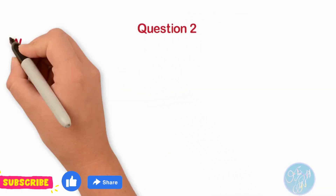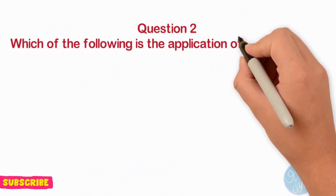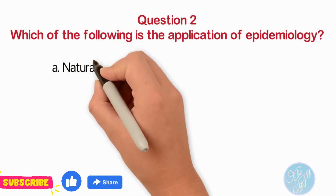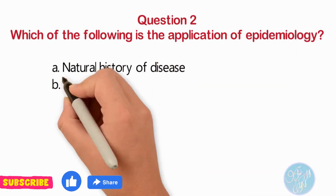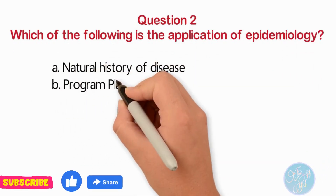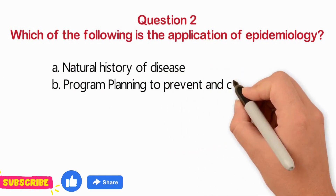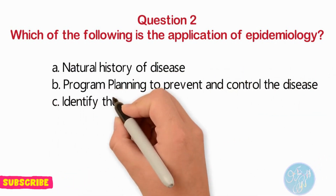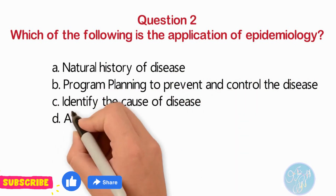Question 2: Which of the following is an application of epidemiology? Option 1: Natural history of disease. Option 2: Program planning to prevent and control the disease. Option 3: Identify the cause of disease. Option 4: All of the above. Write your answer in your study sheet.